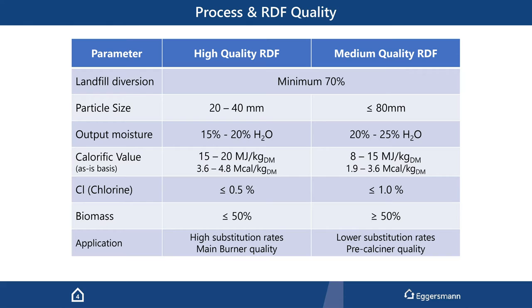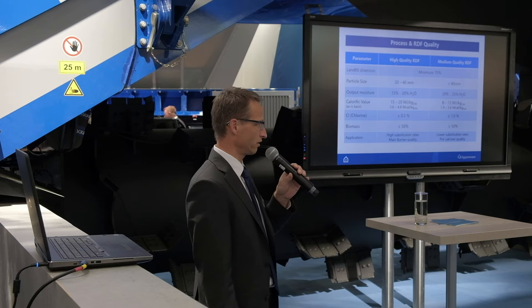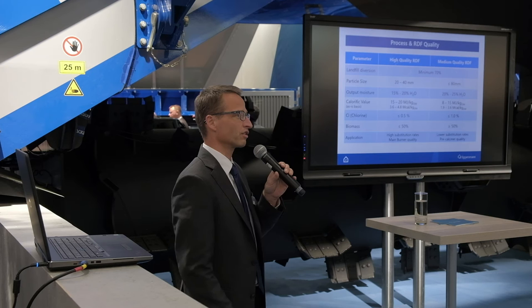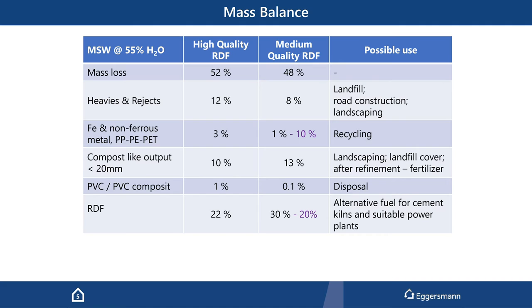The medium quality RDF, which is for smaller facilities, has lower calorific value and can be in bigger particles — so you save the last shredding step — and it usually contains more than 50% biomass. This is more suited for lower substitution rates. My takeaway from Mr. Lechtenberg's last year's alternative fuel symposium was that a lot of cement companies nowadays accept more and more medium quality RDF because it's cheaper.